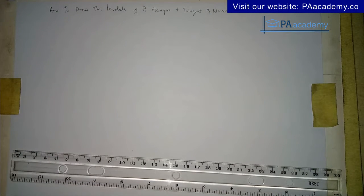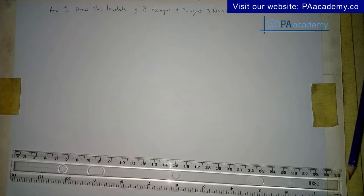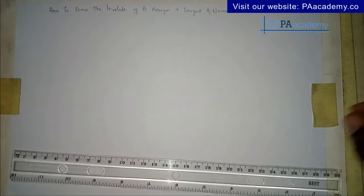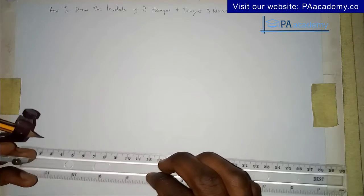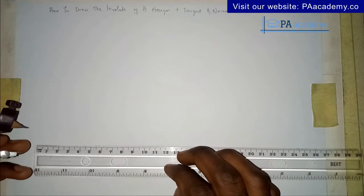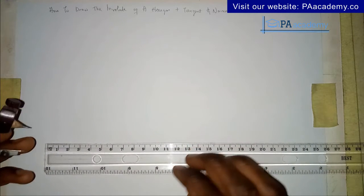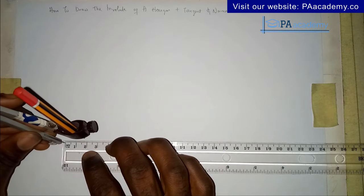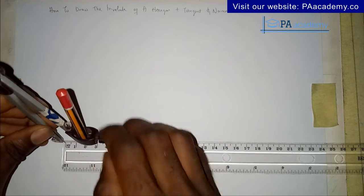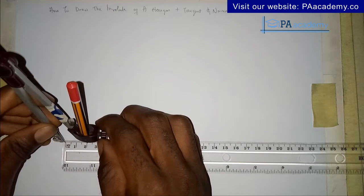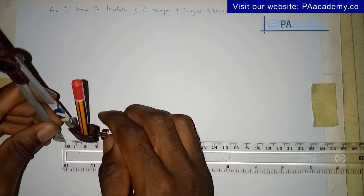Now let's get into this video proper — the involute of the hexagon. The first thing we are going to do is draw the hexagon itself. I'm going to use a side of two centimeters, that's 20 mm. There are different ways you can draw a hexagon, but I'm going to use the circle method.